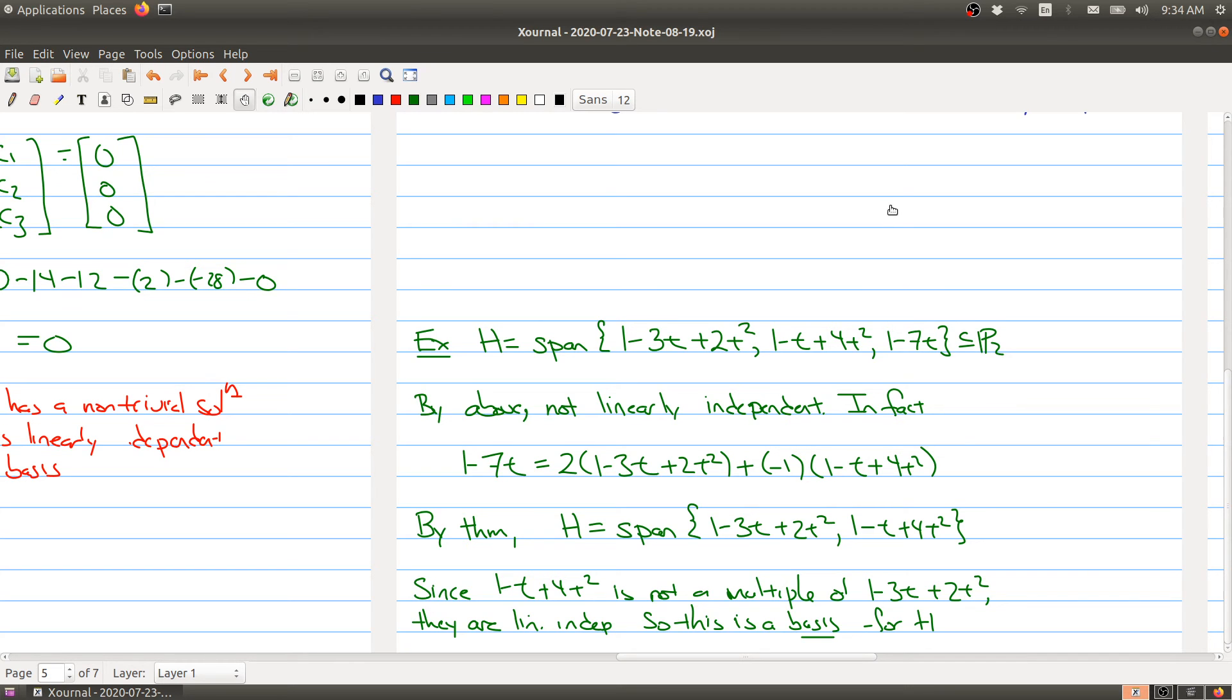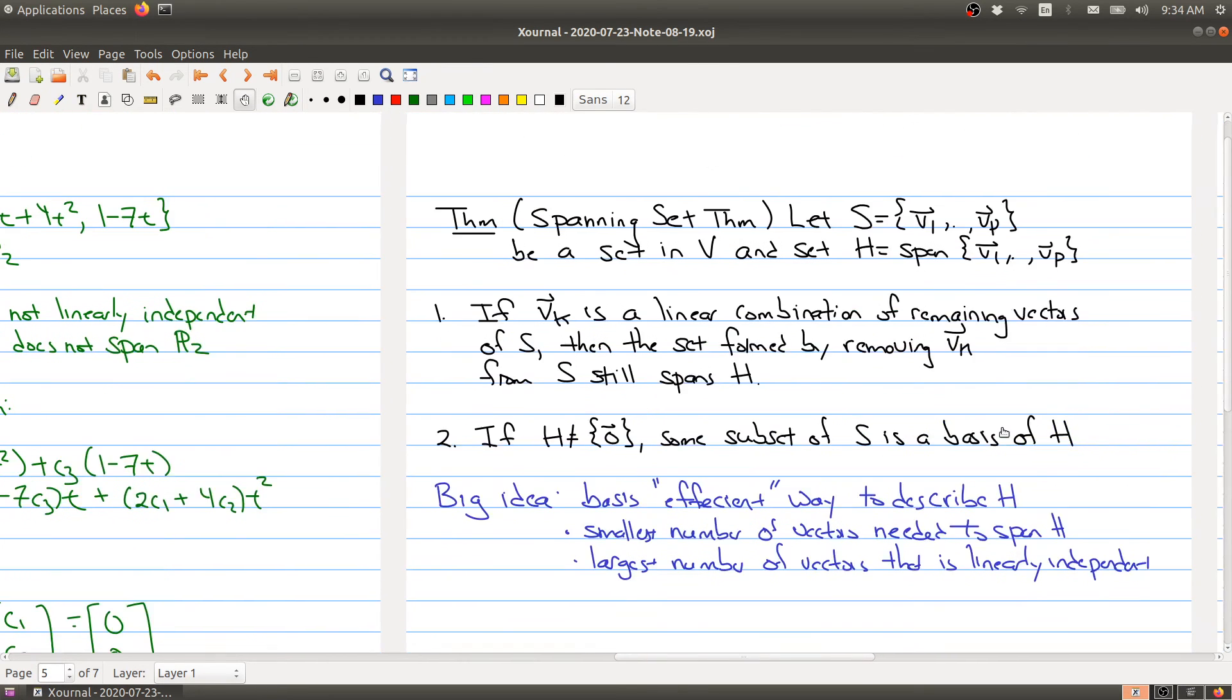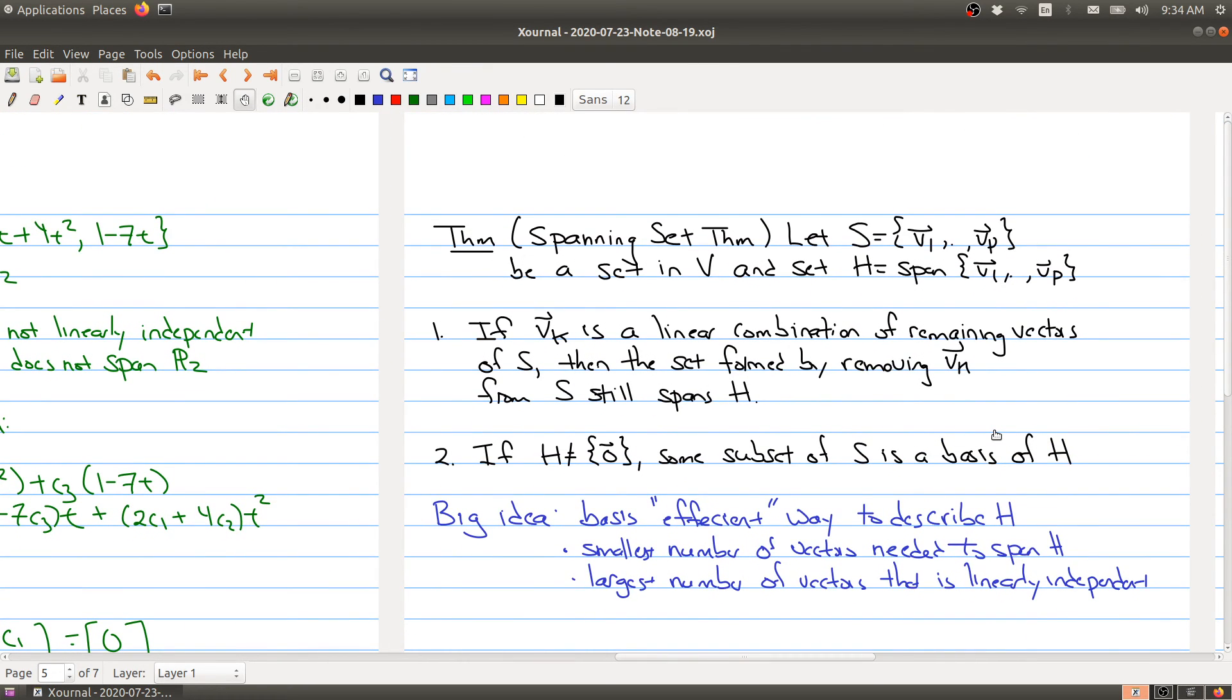That's the spanning set theorem. It's very handy. To reiterate how we normally use it: we start with a bunch of vectors that span our set, then we remove things that are linear combinations. At some point, we'll remove enough to get a basis for H. That's the idea of the smallest number to span. In the next part of this lecture, we're going to look at bases of specific vector spaces that we've seen already in this course. See you in the next part.